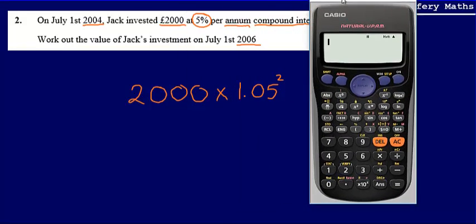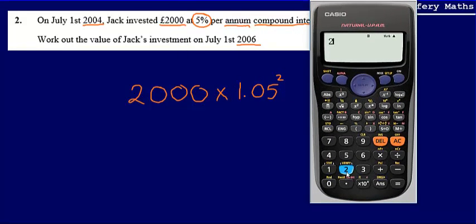So working this out, what we're going to do is we're going to take 2,000, multiply that by 1.05, and then square 1.05.